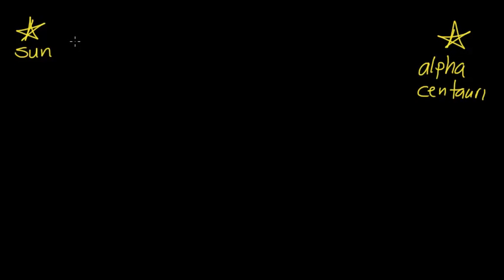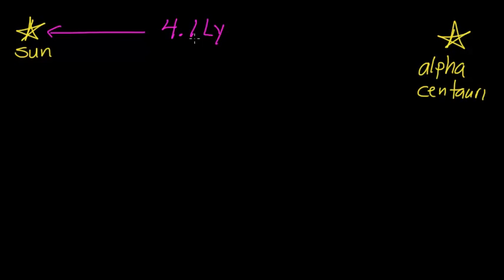In this video, what we're going to try to do is figure out how long it would take to travel from the Earth, which is orbiting the Sun, to our nearest stellar companion, a star known as Alpha Centauri. We know that the distance between the Sun and Alpha Centauri is 4.1 light years.